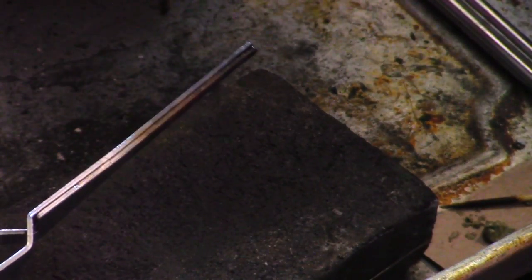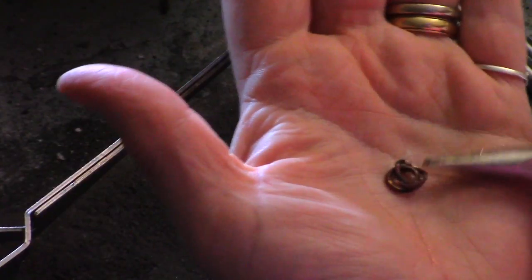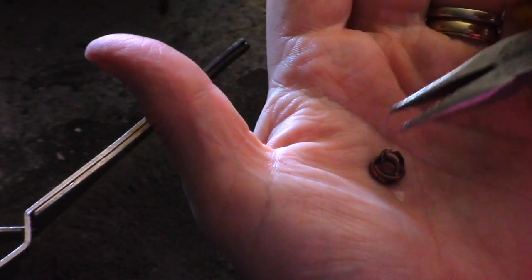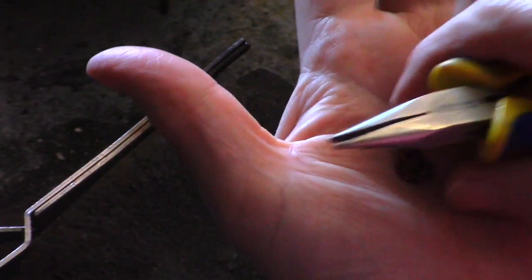So you just want to start to try and form it so that it's sort of making like a rosette or a love knot, whatever you want to call it.